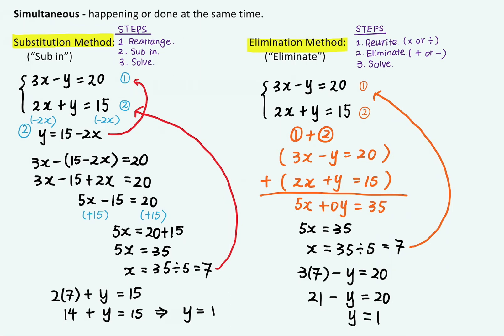So it doesn't matter which method we use, we had the same answer. So x is equal to 7 and y is equal to 1. And in this question, it's probably easier to use elimination method. And in this case, we didn't have to rewrite the equation. But we'll see more complicated cases in the future.